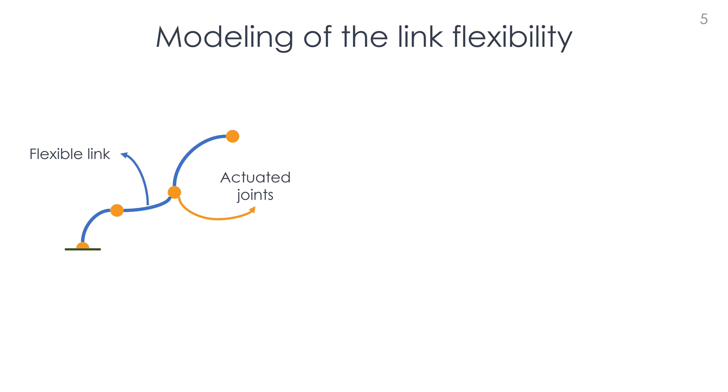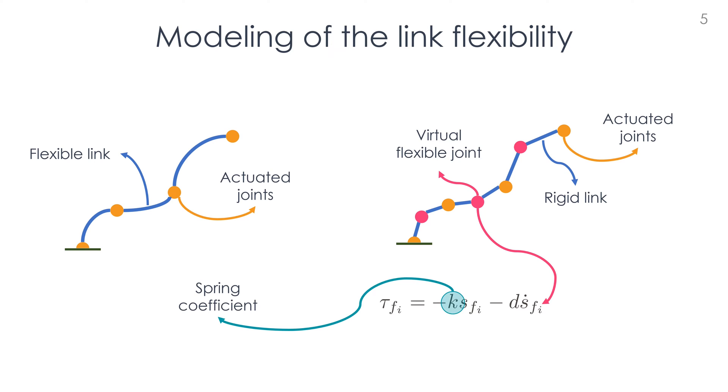One of the most common approaches to model a flexible robot is to substitute all the flexible links with a pair of one or more virtual flexible joints and rigid links. In this context, the flexible joints have their own dynamics, composed by two terms: a spring, characterized by the parameter K, and a damper, by the parameter D.